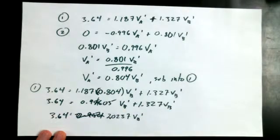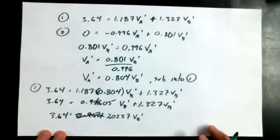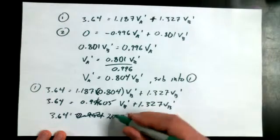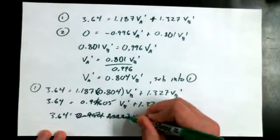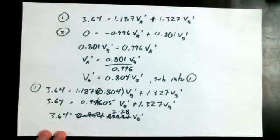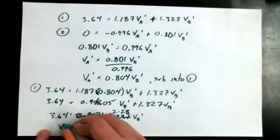2.0237 VB-primed is equal to 3.64. And if I divide both sides by 2.0237... 2.28. That's if you use... the quantity of VB-primed. Sorry, VB equals 2.0. Too many cooks. 2.28 VB-primed, is that, yeah? Then we divide both sides by 2.28, and we get VB-primed to be what, then?